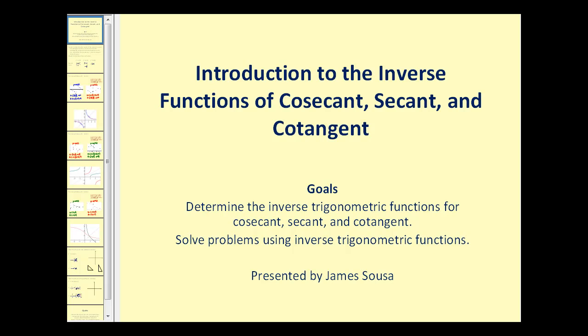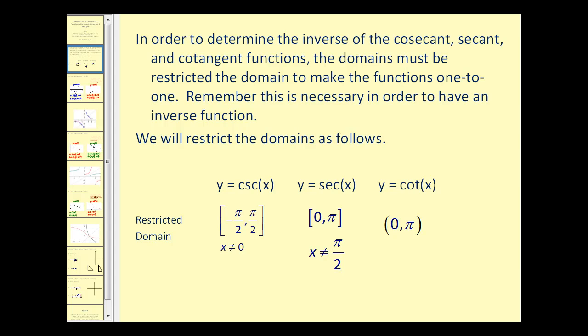Welcome to an introduction to the inverse functions for cosecant, secant, and cotangent. Just as we did when we found the inverses for sine, cosine, and tangent, in order to determine the inverses of cosecant, secant, and cotangent, the domains must be restricted to make the functions one-to-one. Remember, this is necessary in order to have an inverse function, and we will restrict the domains as follows.